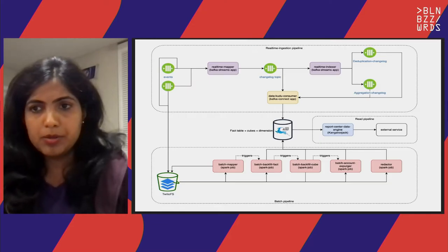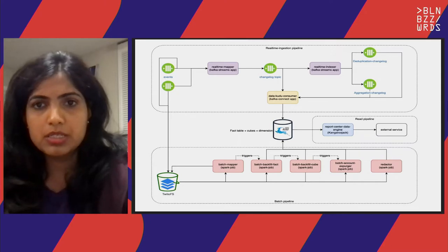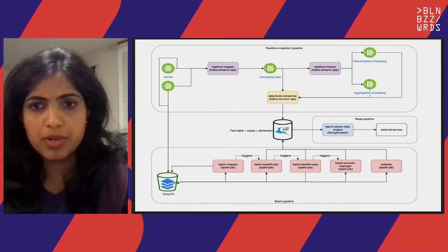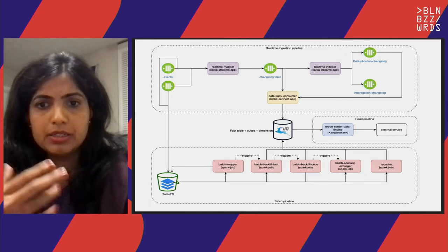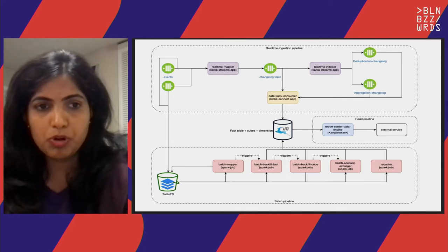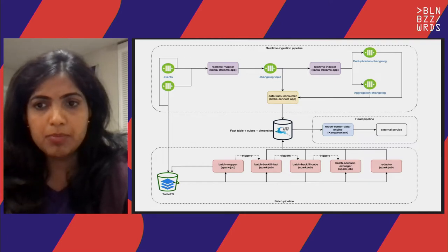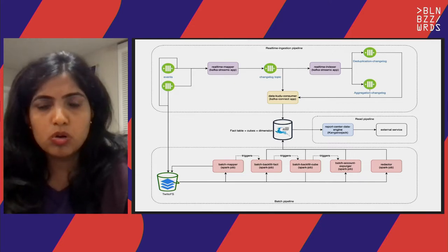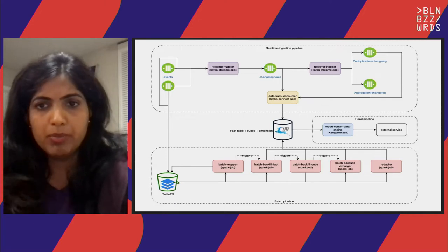So this is our architecture. On the top part, you can see the real-time ingestion pipeline. The bottom part shows the batch pipeline, and as the database to store the data we use Apache Kudu. We have a read pipeline where we provide APIs to query that data. We'll be focusing on the real-time ingestion pipeline for the min max aggregations.